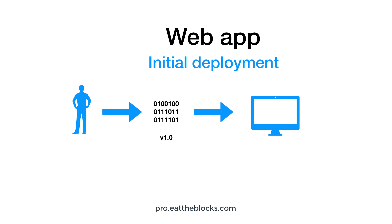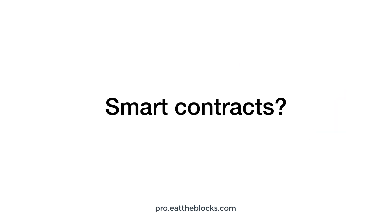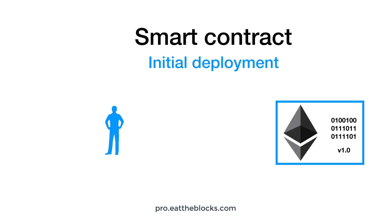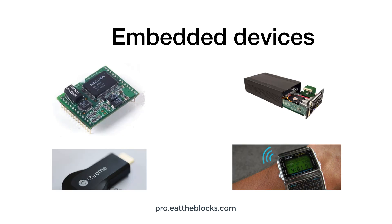In a traditional web application, after you deploy your code to production, if there is a bug you can always fix the bug in the code and redeploy your application on your server. With smart contracts, unfortunately it's not that easy. After you deploy a smart contract, the code is immutable on the blockchain, which means you can't change it anymore. This is very similar to what we see in the hardware industry, where once you ship your device its code cannot be changed anymore.